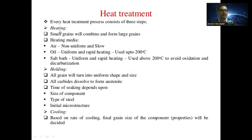In the heating process, small grains combine and form large grains. Heating media include air, which is non-uniform and slow, and oil, which provides uniform and rapid heating used up to 200 degrees Celsius.